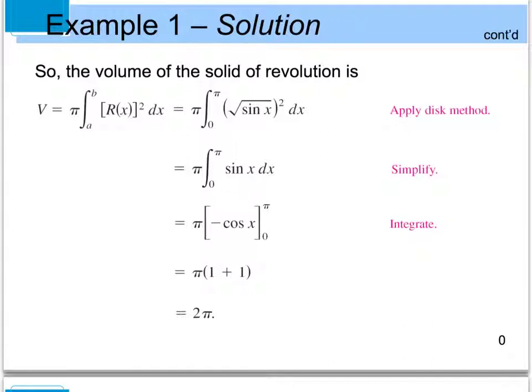Integrating sin x gives −cos x, so I have π times [−cos x] evaluated from 0 to π. Plugging in π: −cos(π) = 1. Plugging in 0: −cos(0) = −1, and because we're subtracting it becomes +1. So 1 + 1 = 2, times π gives a volume of 2π.